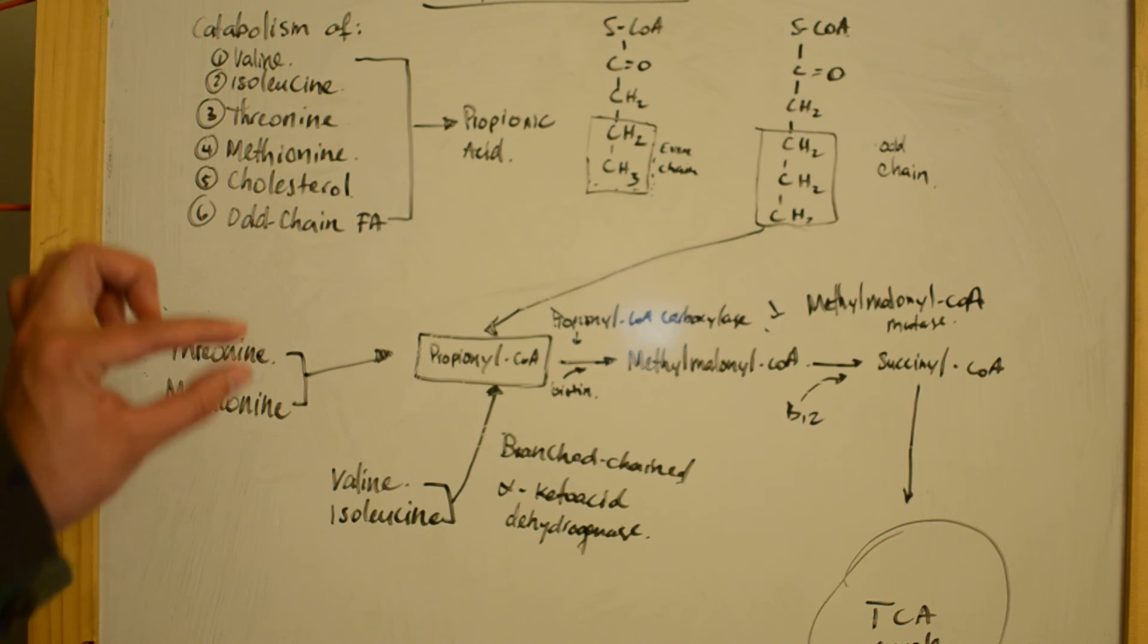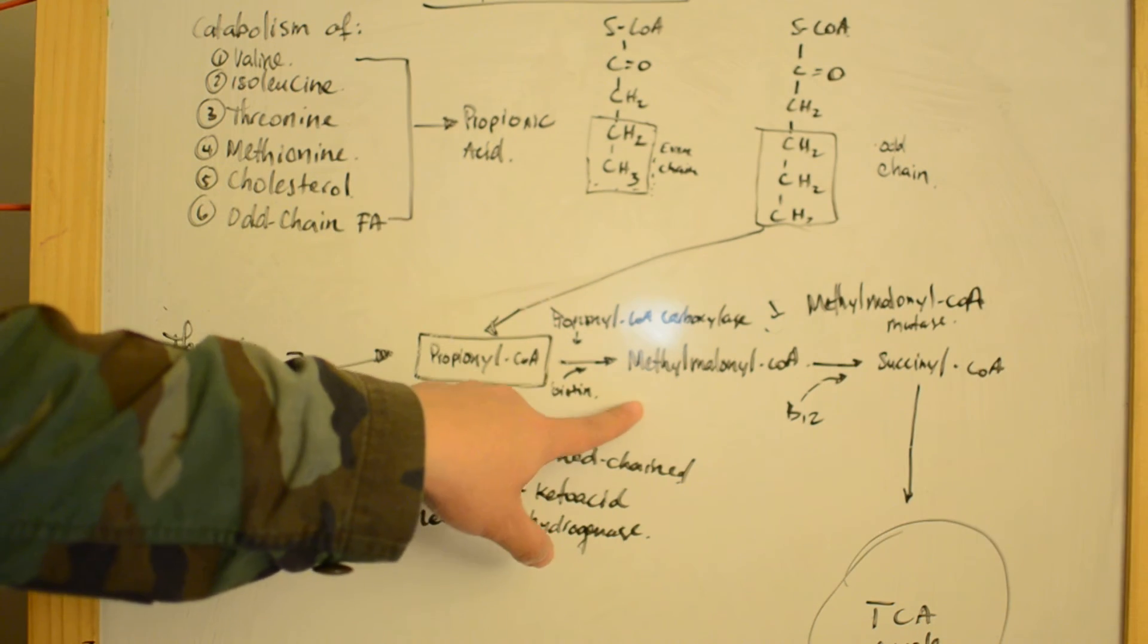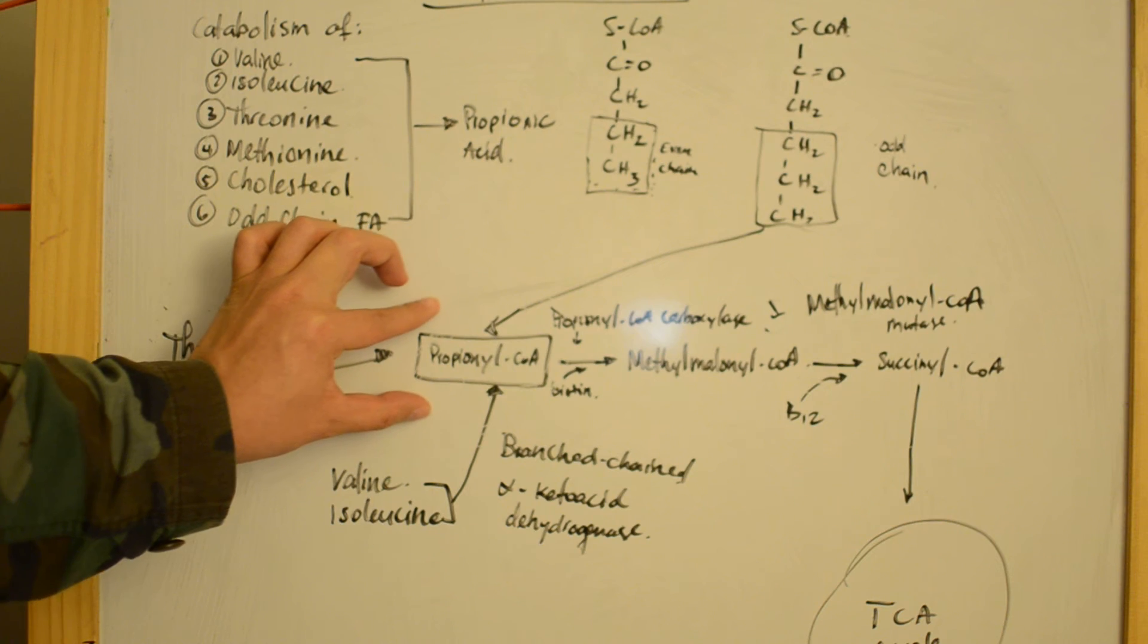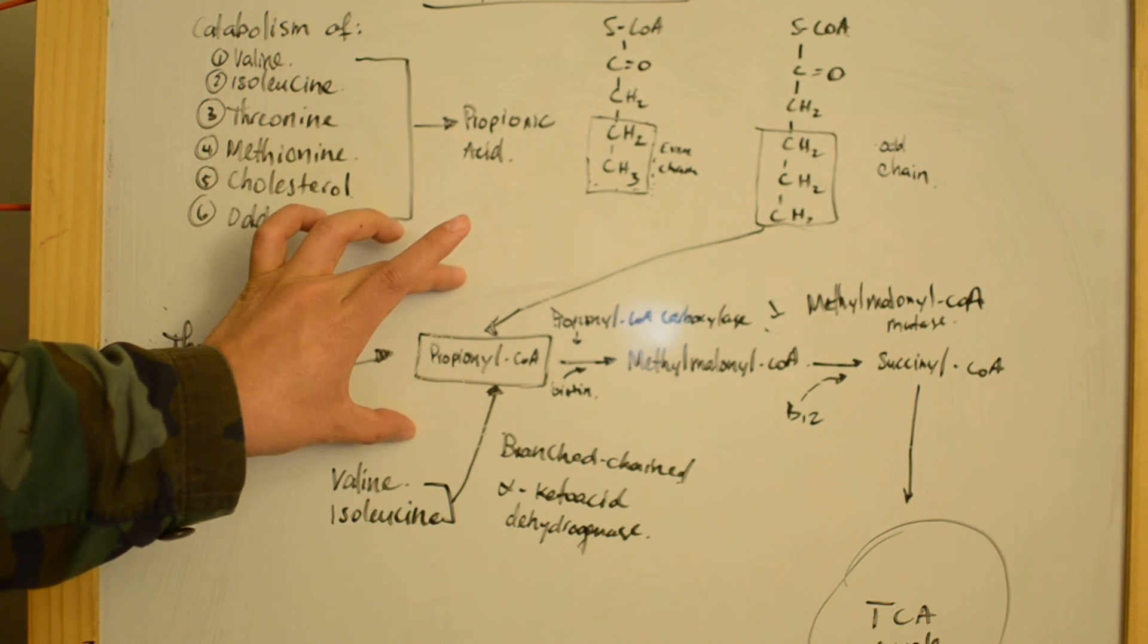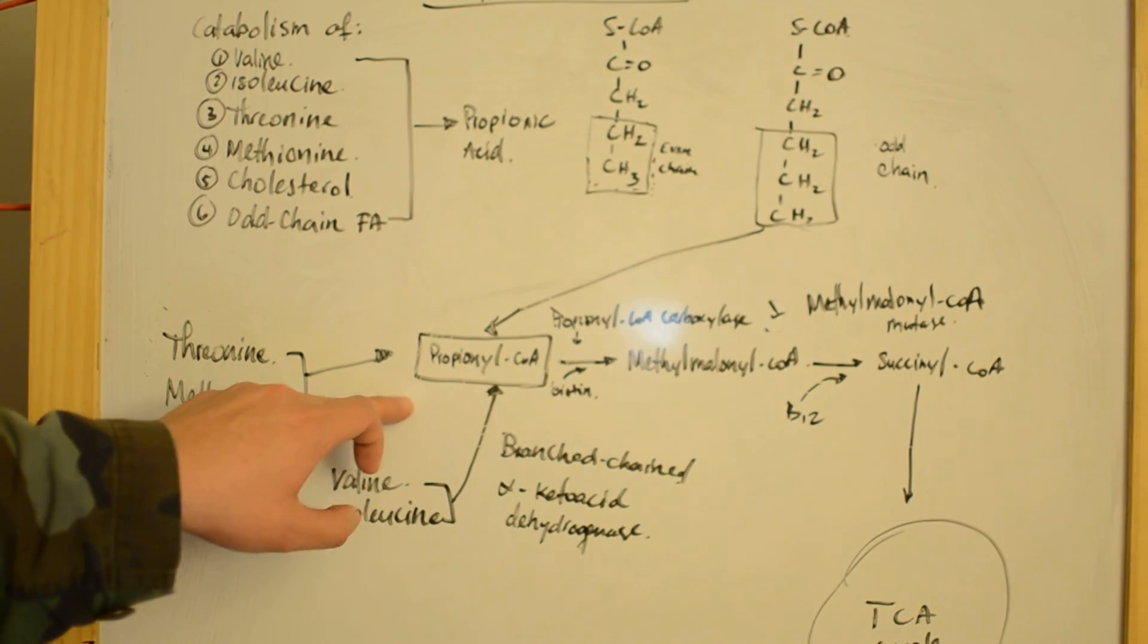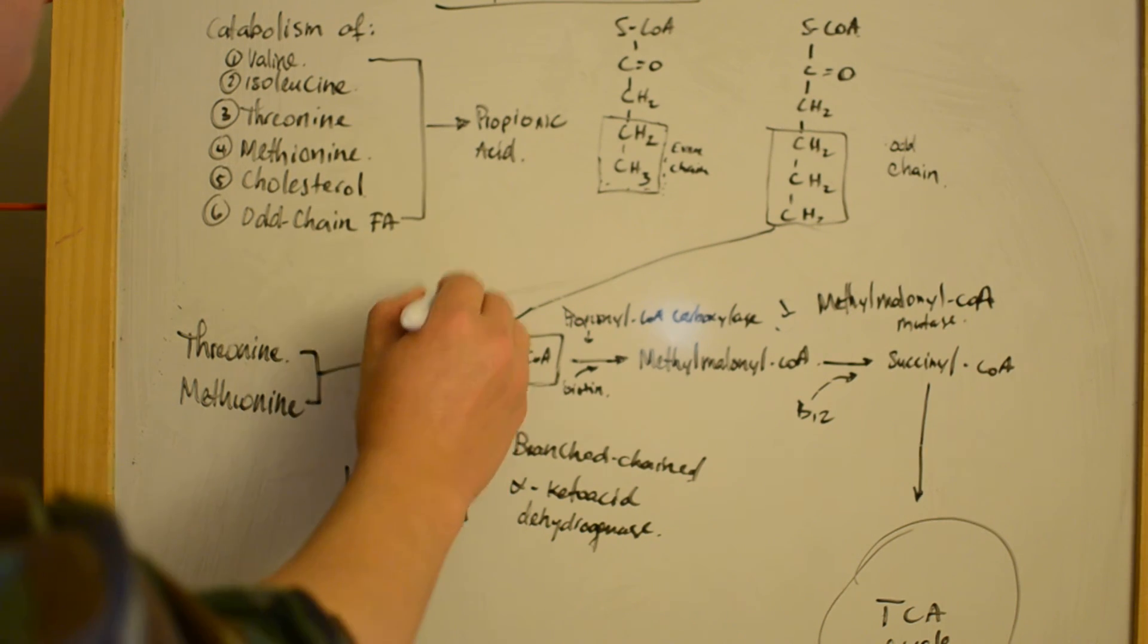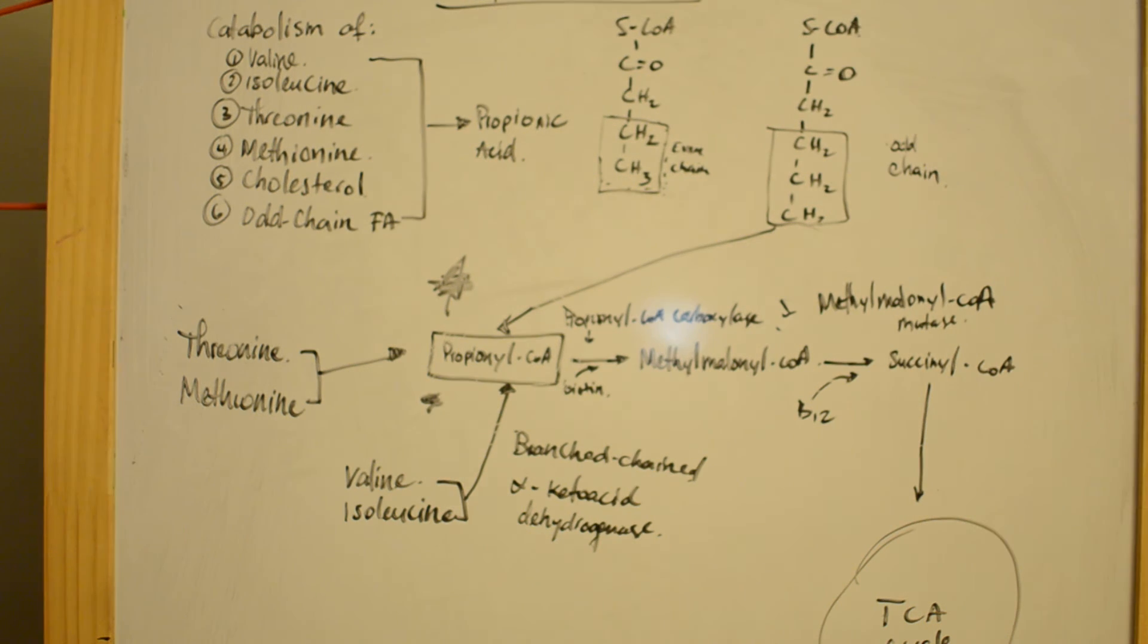In the case of congenital propionyl-CoA carboxylase deficiency, we would have the accumulation of propionyl-CoA because it's unable to be converted into methylmalonyl-CoA, and that causes propionic acidemia.